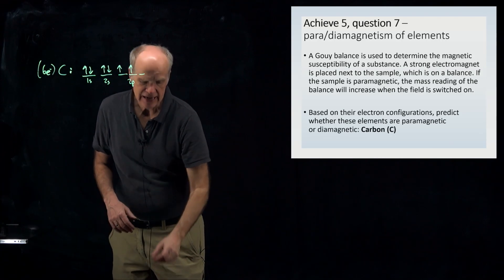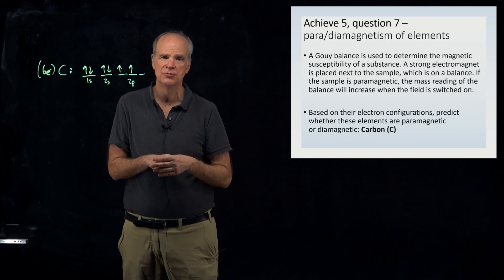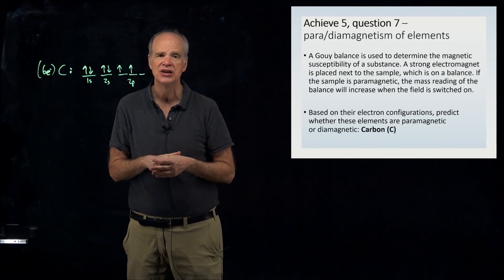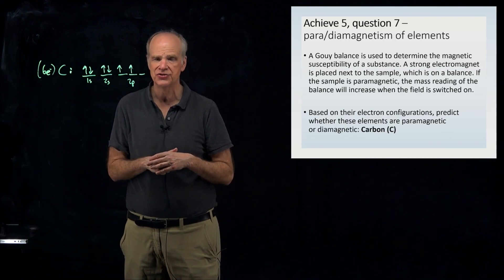So a paramagnetic atom will be one that will be attracted to the poles of a magnet because it has at least one unpaired electron in its configuration.